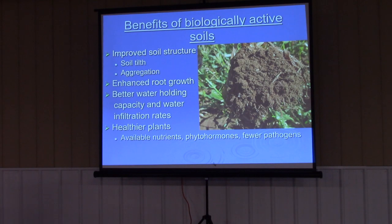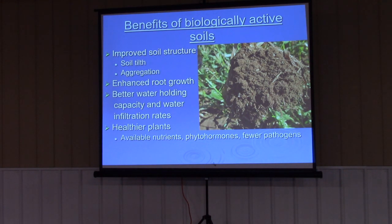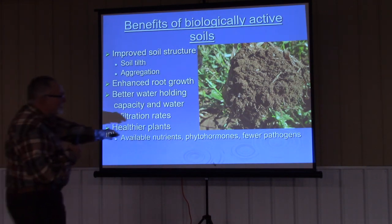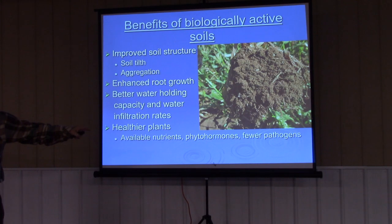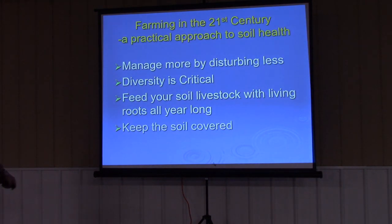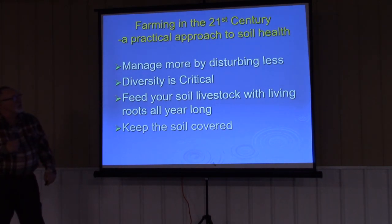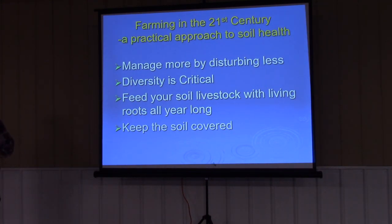We can talk about COVID — if you're going to get sick with COVID, one of the things they talk about is those with underlying health issues, they've already got something wrong with their health. Same thing with the soil: if you have a problem in the soil, you're going to get pathogens. What do insects attack first — the healthy plants or the sick plant? The sick plant. That plant is sick because the soil is sick. So you've got to start from building a healthy soil. Manage by disturbing less. Don't overgraze. Diversity is critical in this process of maintaining enough plant diversity.